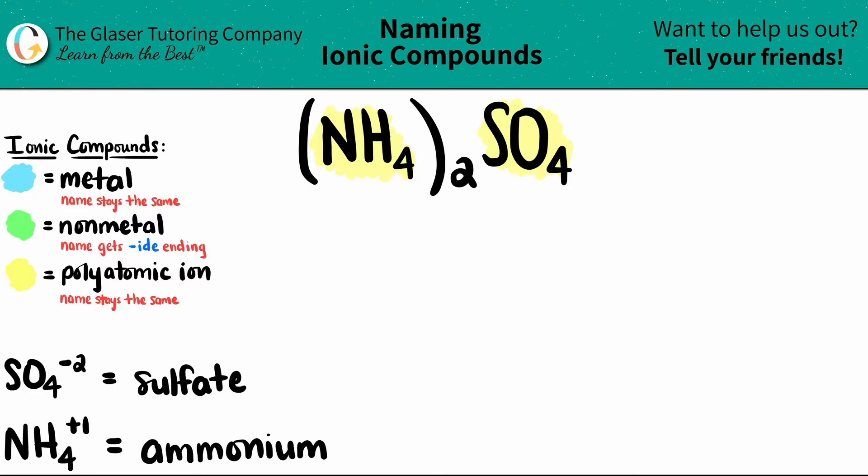Naming this is pretty easy because all the polyatomic names stay the same. Since NH4 comes first, ammonium has to be stated first. Then, since this is a polyatomic, that name stays the same, so it's sulfate.